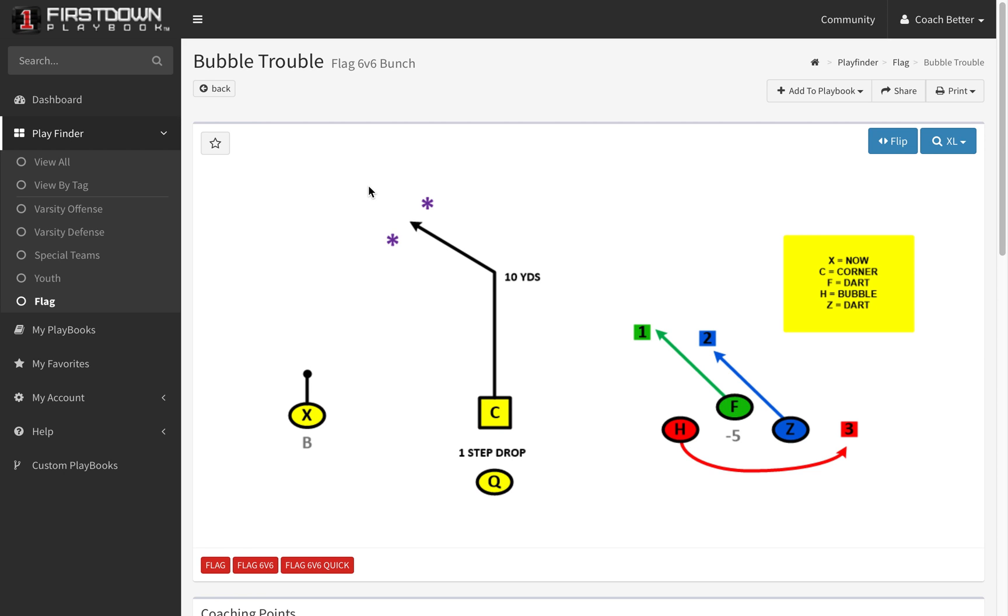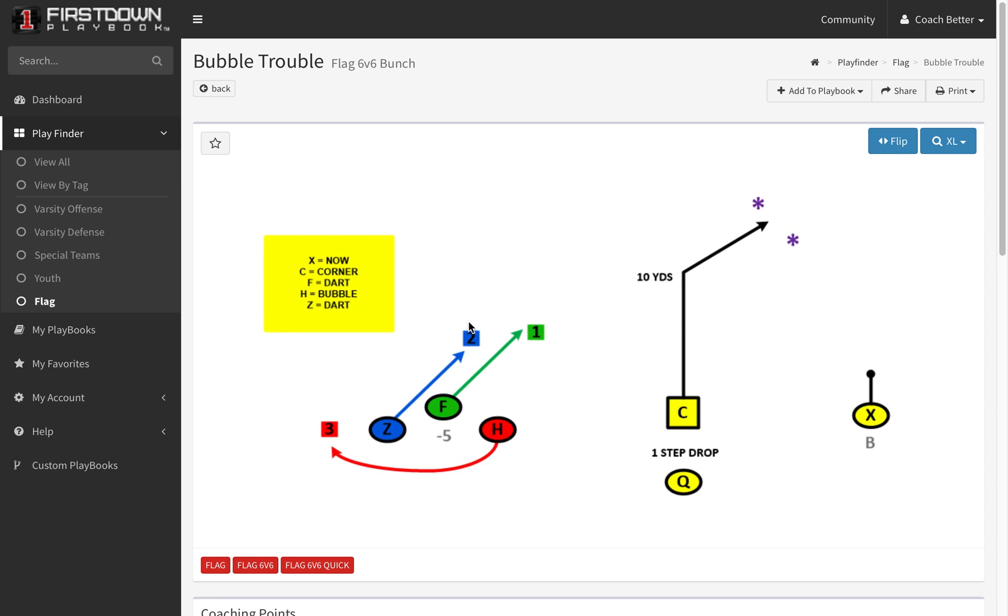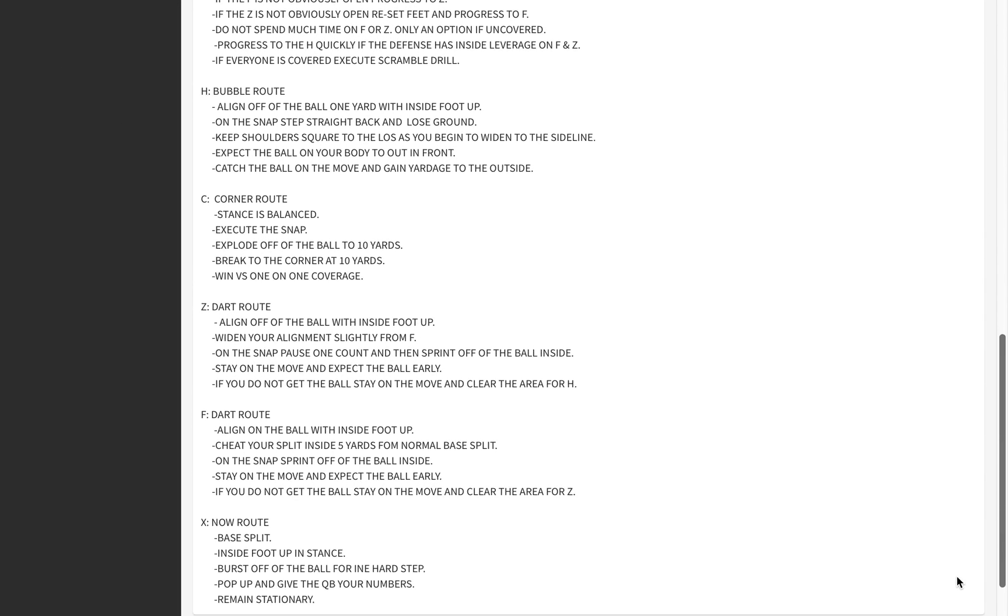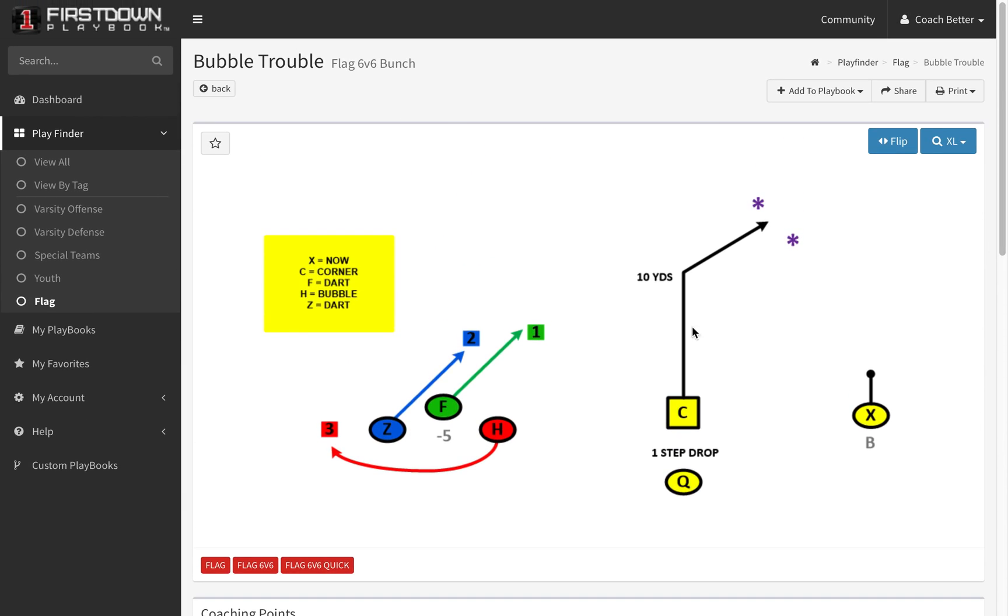So just like all First Down Playbook plays, you can run it both ways, whichever way you want to, wherever you are on the field. We've got the coaching points and all that drawn up. And understand that this color code system is true for all of the First Down Playbook flag plays, and we've got 4v4 flag, 5v5, 6v6, 7v7, and 8v8 flag football plays. So be on the lookout for that this fall as you begin putting in your plays for your offense.